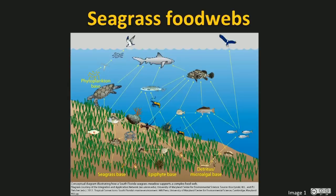Looking at this food web, we can see three parts of the system — seagrass, epiphytes and algae, and detritus and microalgae — all supporting consumers. Seagrass is directly grazed on by dugongs, turtles, and some echinoderms, which include sea urchins for example.